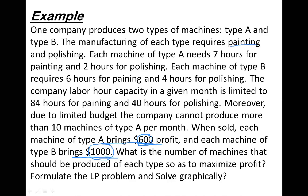We have two phases of the production process: painting and polishing. A machine of Type A needs six hours of painting and two hours of polishing. A machine of Type B requires six hours of painting and four hours of polishing. We have two constraints: the total hours for painting is 84 hours, the total hours for polishing is 40 hours, and the number of machines of Type A must not exceed 10.